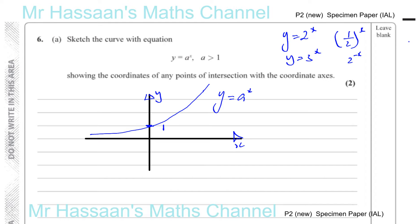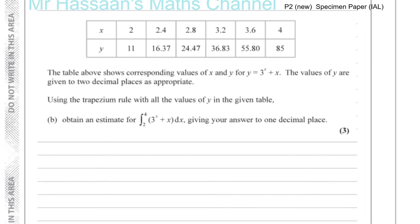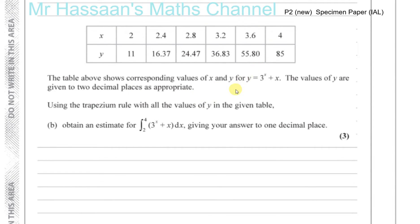So that's the answer to 6A. Now 6B, they have given us a table of values for x and y, for the curve y equals 3 to the power of x plus x. The values of y are given to 2 decimal places where needed. So we've got to use the trapezium rule with all the values of y given in the table to obtain an estimate for the integral of 3^x plus x dx between 2 and 4. So basically an estimate for the area under this curve between 2 and 4. We're not actually able to integrate this function with the knowledge that we have up to P2 in integration. So we're going to use the trapezium rule to estimate the area under the curve between 2 and 4.